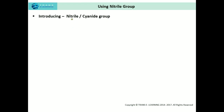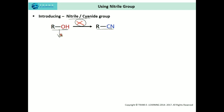First of all, introducing the nitrile, or what we call the cyanide group. You can see here that I put a cross — that means the direct conversion of aliphatic alcohol to alkyl nitrile is just not possible. So in this case, first we need to convert alcohol into alkyl halides, and then convert alkyl halides into nitrile by introducing this cyanide group.